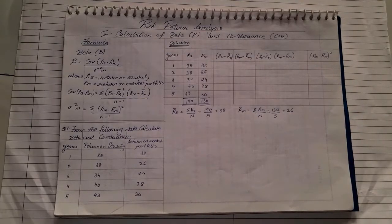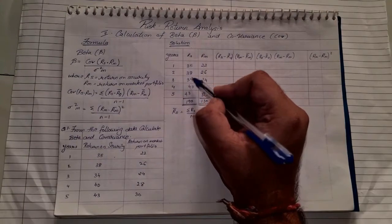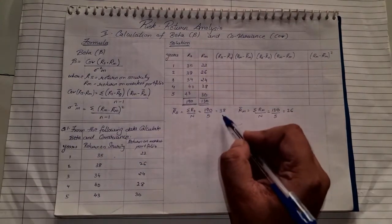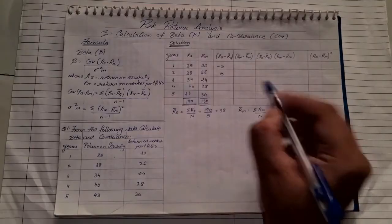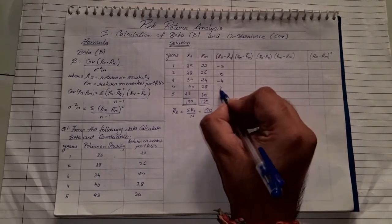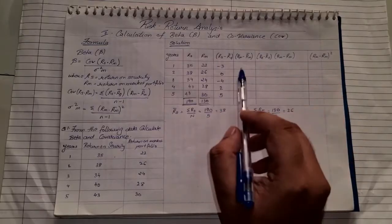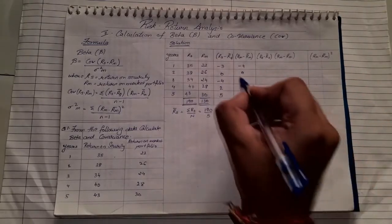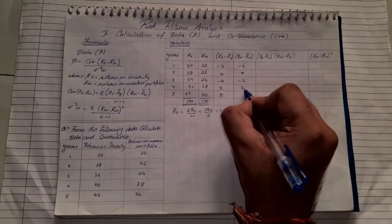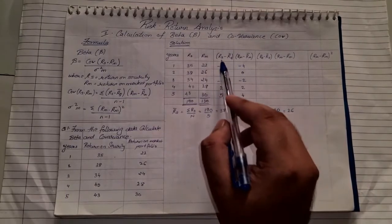Now we calculate the deviation columns. For RS minus R-bar-S: 35 minus 38 = −3, 38 minus 38 = 0, 34 minus 38 = −4, 40 minus 38 = +2, 43 minus 38 = +5. For RM minus R-bar-M: 22 minus 26 = −4, 26 minus 26 = 0, 24 minus 26 = −2, 28 minus 26 = +2, 30 minus 26 = +4.